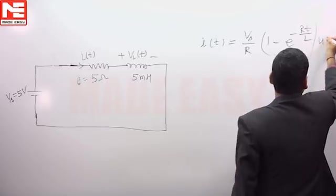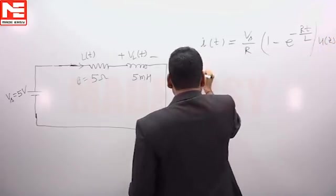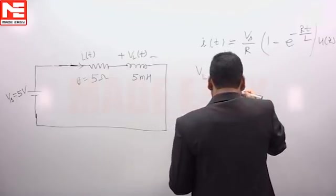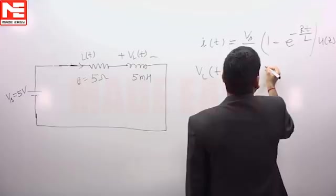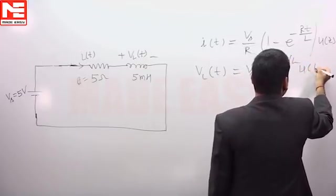And VL(t) will be equal to differentiating this and multiplying by L, so Vs e to the power minus Rt by L u(t) volt.